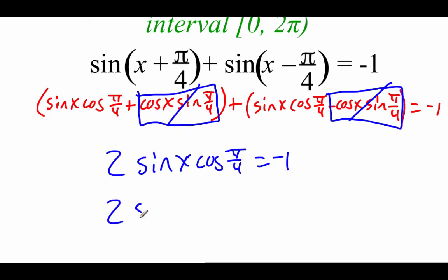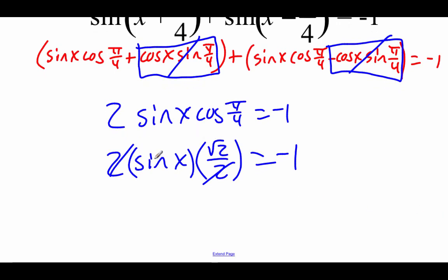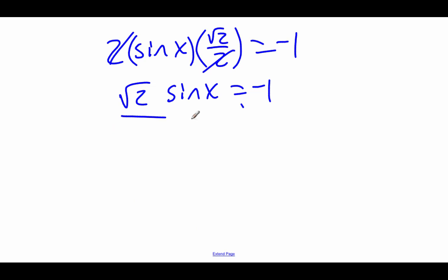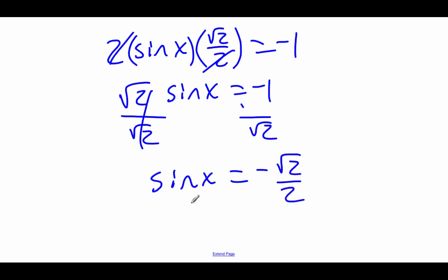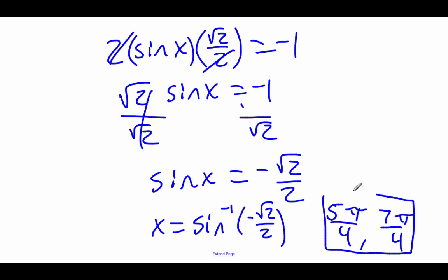Cosine of pi over 4 is root 2 over 2, so we have 2 times sine x times root 2 over 2 equals negative 1. The 2 and the denominator 2 cancel, leaving root 2 times sine x equals negative 1. Dividing both sides by root 2 and rationalizing, we get sine x equals negative root 2 over 2. Taking the inverse sine, we look for where on the unit circle this occurs. Since it's a negative sine value, we're looking in the third and fourth quadrants, finding 5 pi over 4 and 7 pi over 4. Since we're restricted to 0 to 2 pi, those are our final answers.